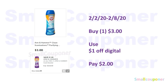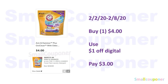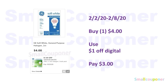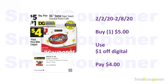The Arm & Hammer Clean Sensations scent boosters are $3.00; use the $1 off digital and pay $2.00. The Arm & Hammer packs are $4.00; use the $1 off digital and pay $3.00. The GE Soft White General Purpose Halogen 2-count light bulbs are $4.00; use the $1 off digital and pay $3.00. The DG Home Paper Towels, the 6-roll pack, are $5.00; use the $1 off digital and pay $4.00.